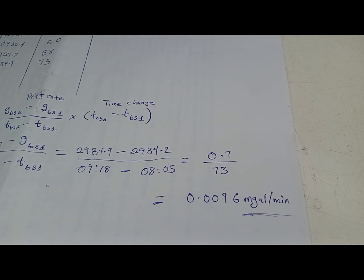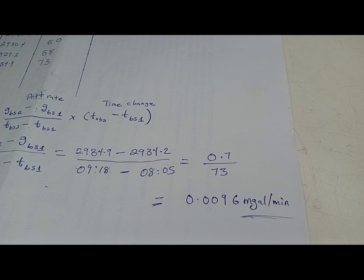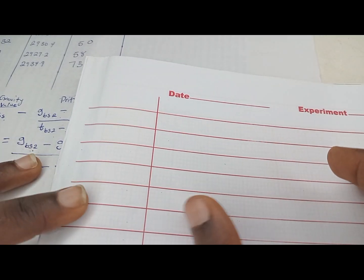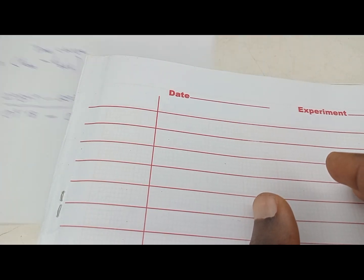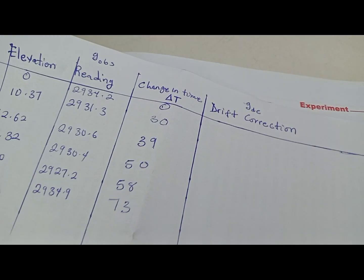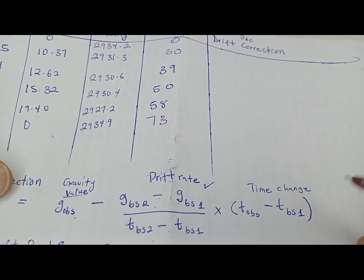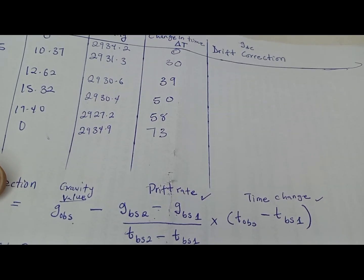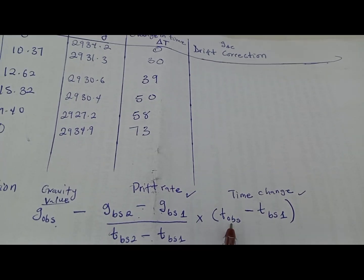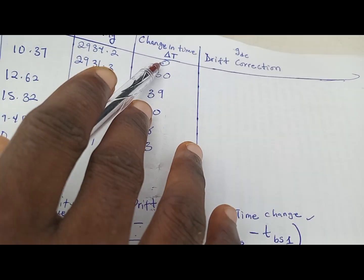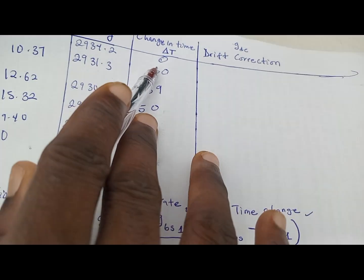Now we have our drift rate. Looking at our formula, I'm going to start solving the drift correction for each station. The drift rate is constant — it does not change. But your change in time will change because it depends on the station you are in. We have already calculated the change in time for each station.